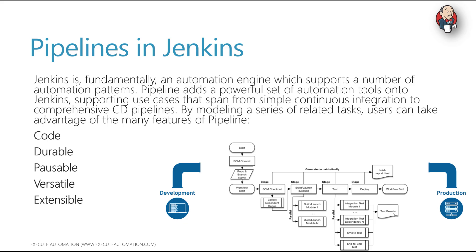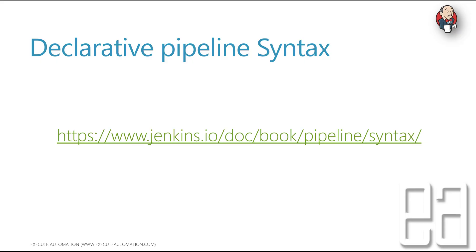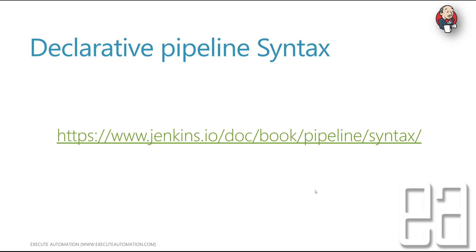We already saw an example of pipeline syntax in Jenkins, and when we created our first repo and pipeline with the Blue Ocean theme, the pipeline was automatically created for us. This exact syntax is called the declarative pipeline syntax. Declarative pipeline syntax is not limited to agents, stages, echo commands, write files, or archive artifacts — there are even more syntax elements based on the plugins you install.